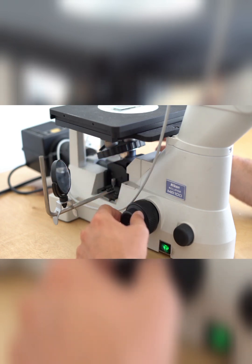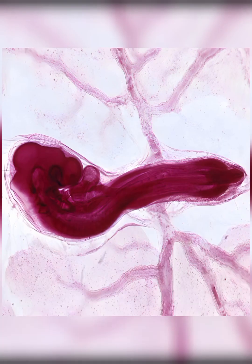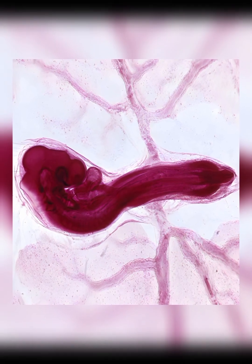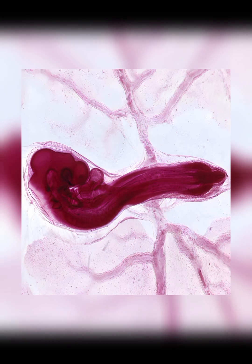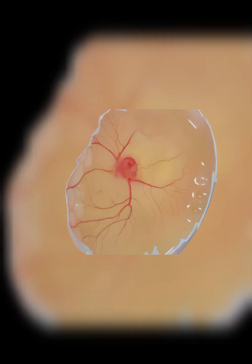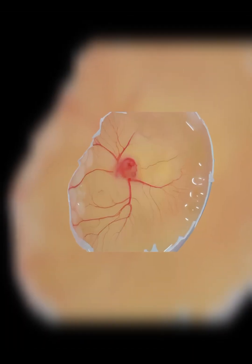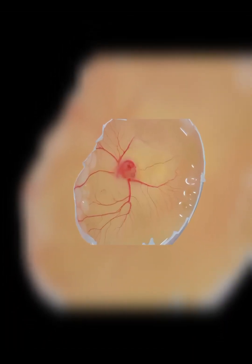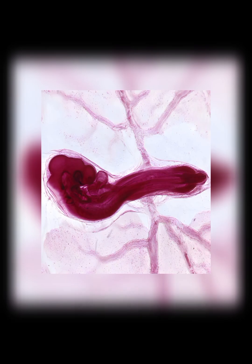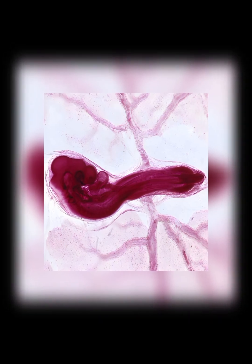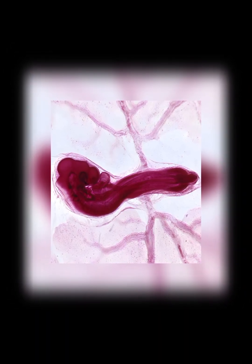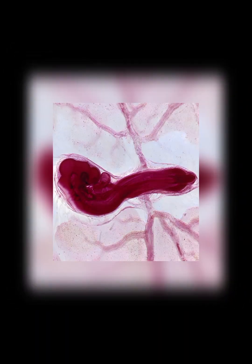The brain continues to develop with five distinct vesicles forming. The heart is prominent and beating. The optic vesicles invaginate to form the optic cups, which will eventually become the eyes. Limb buds emerge, which will develop into wings and legs.